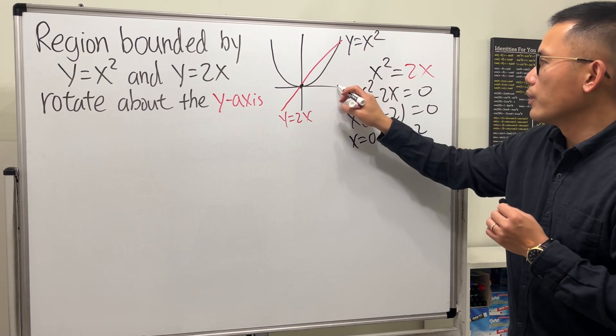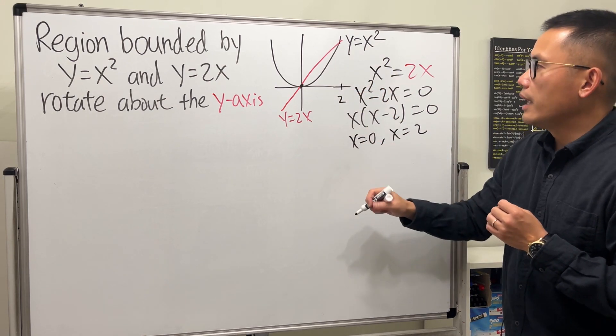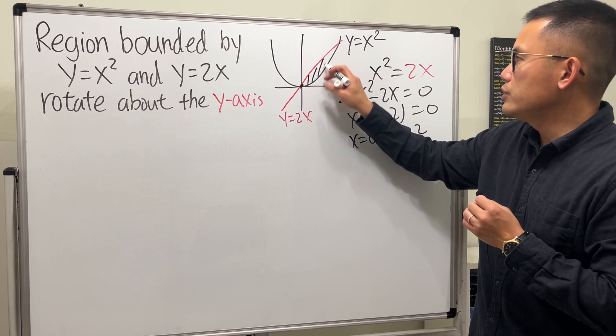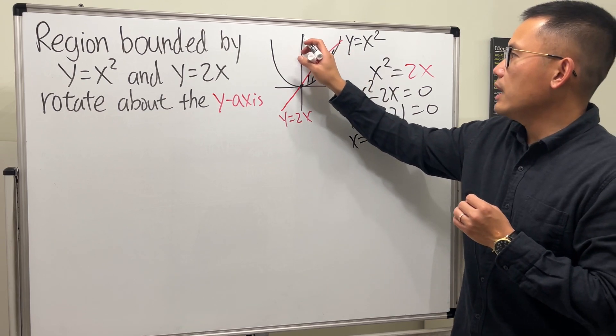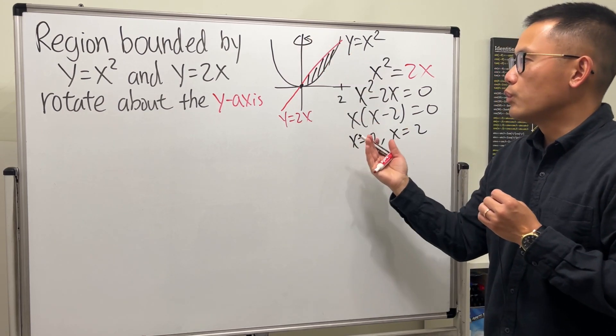So the intersection points are at x equals 0 and x equals 2, and this is the region we are going to rotate about the y-axis.